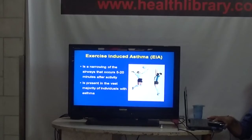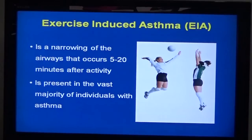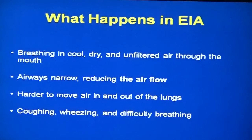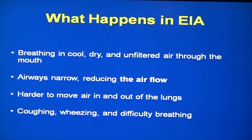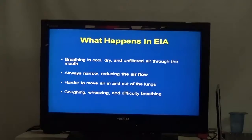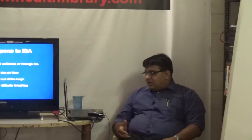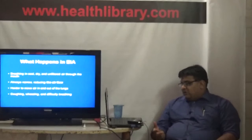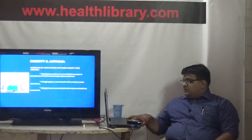Exercise-induced asthma usually occurs about 15 to 20 minutes after the onset of activity and is present in the vast majority of individuals with asthma. In such cases, the exercising person breathes through the mouth, losing the nose's hydration and moisturization of air. This leads to narrowing of the airway, making it harder for air to move in and out of the lung, causing coughing, wheezing, and breathing difficulty.